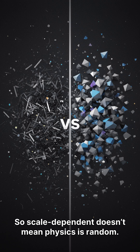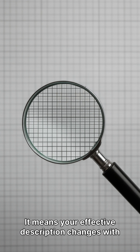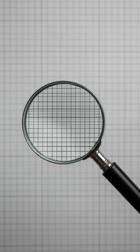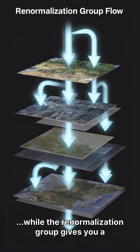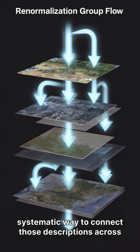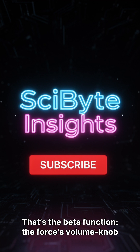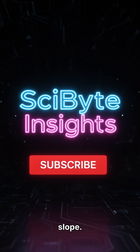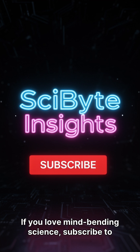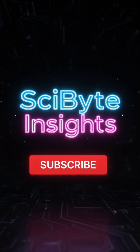So scale-dependent doesn't mean physics is random — it means your effective description changes with resolution, while the renormalization group gives you a systematic way to connect those descriptions across scales. That's the beta function: the force's volume-knob slope. If you love mind-bending science, subscribe to Scybite Insights for more.